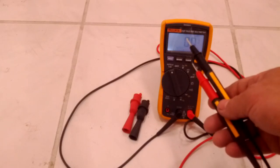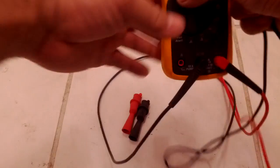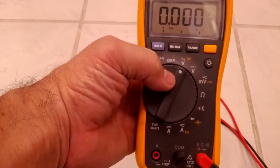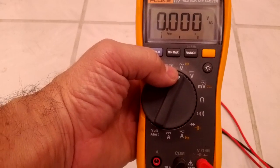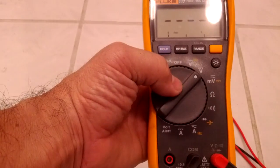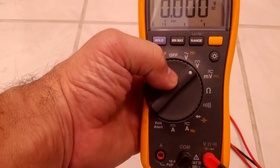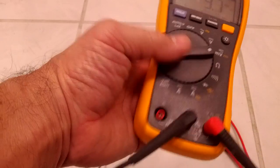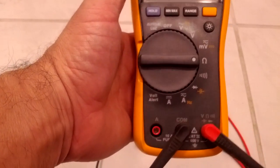So it differentiates automatically between AC and DC, and that's a nice handy feature as well. Otherwise, you simply move this over to the AC setting, which is the V with a wavy line above it. DC setting is the V with the dotted and straight line above it. Then you have the millivolts. I don't use that setting.